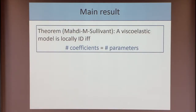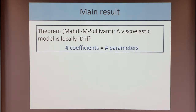Our main result: a viscoelastic mechanical model is locally identifiable if and only if the number of non-monic coefficients equals the number of parameters. The forward direction is not too hard to see — we found that for viscoelastic mechanical models the number of parameters is always greater than or equal to the number of coefficients, so a necessary condition for local identifiability is that these counts are equal. Showing it is also sufficient is trickier, and that's what I'll spend most of the time describing.